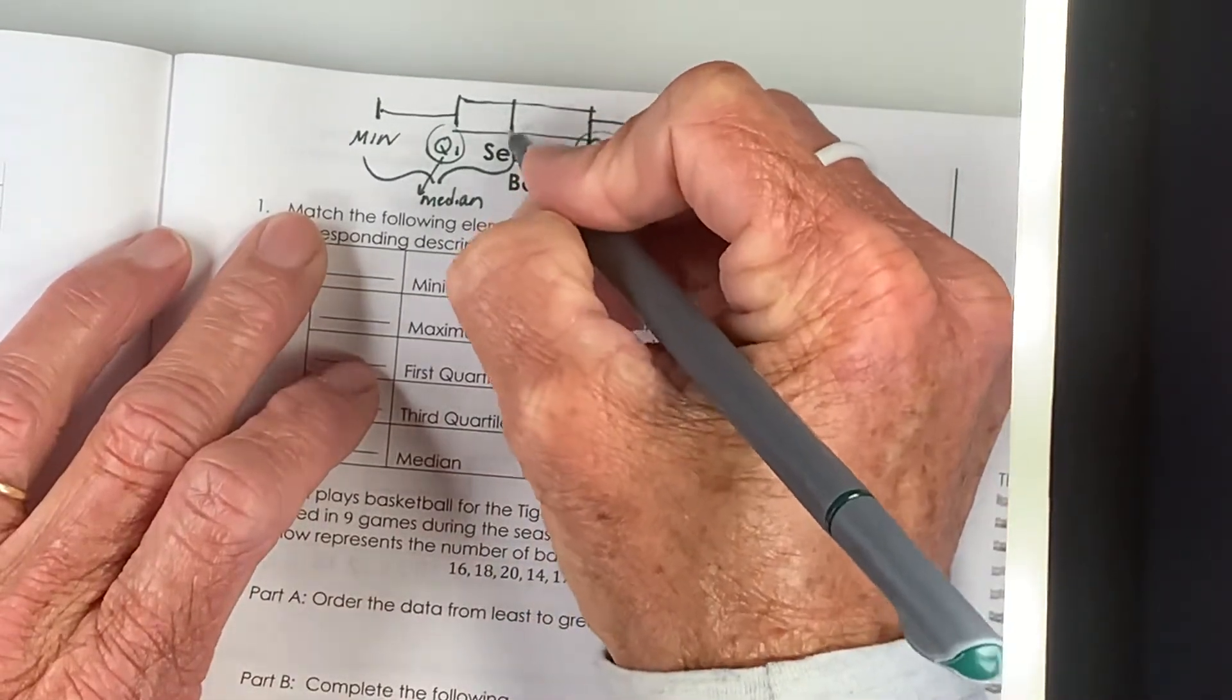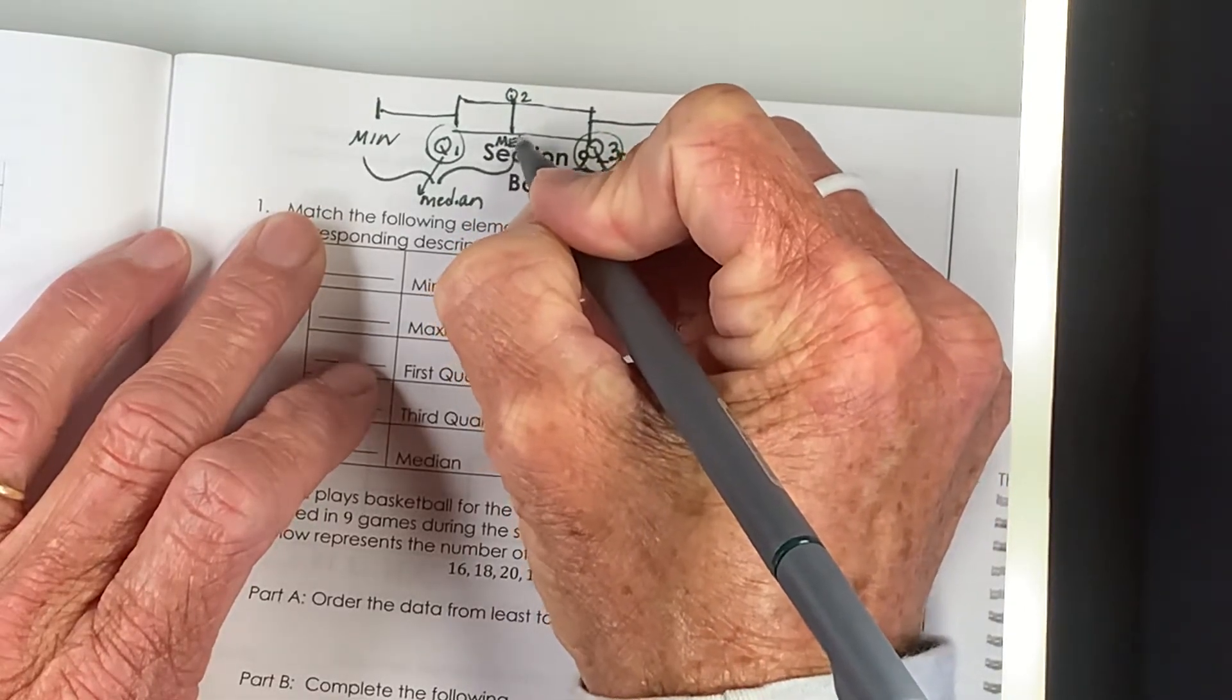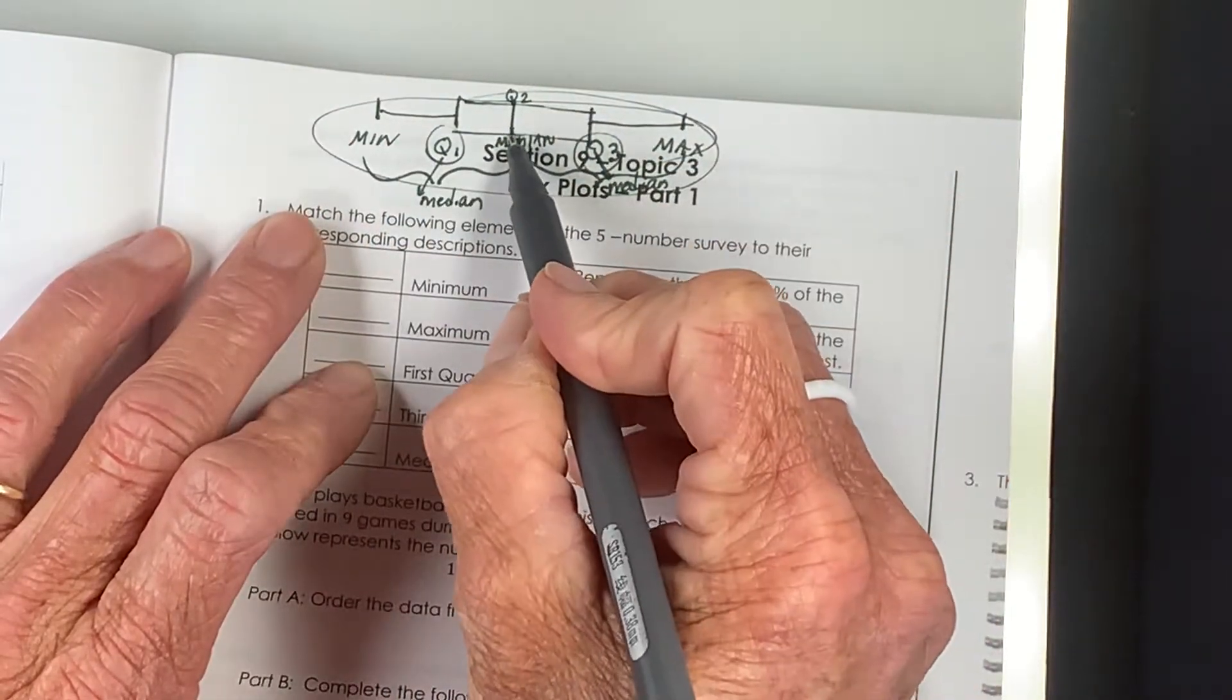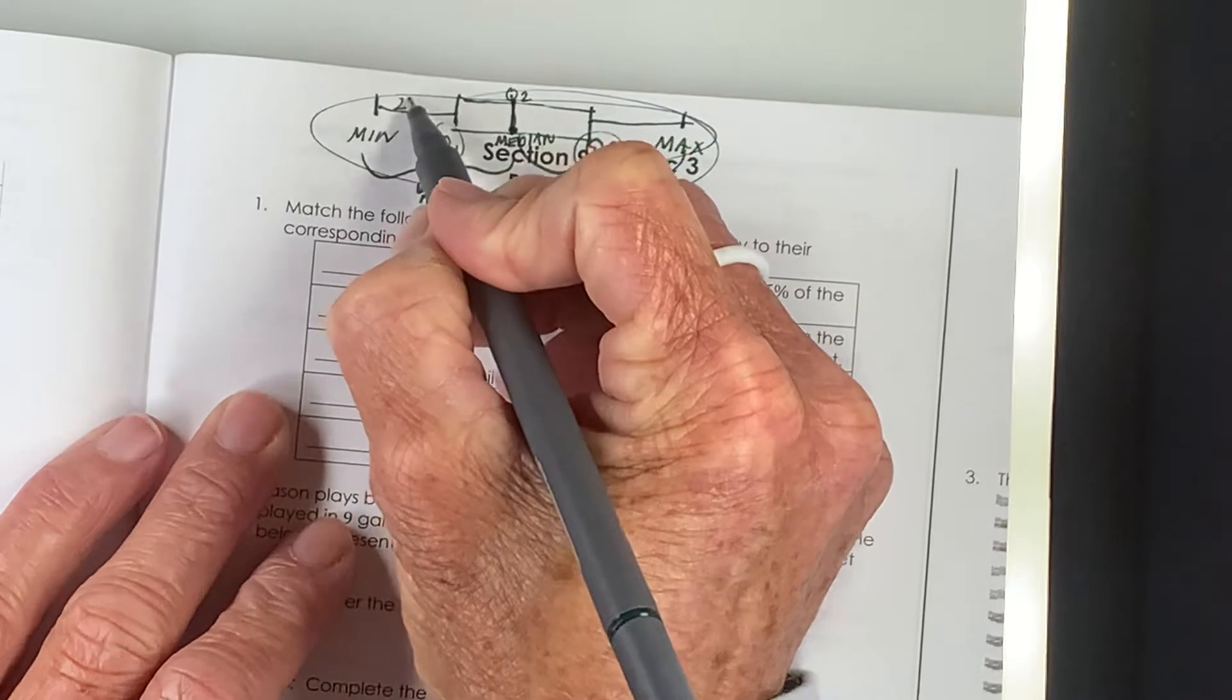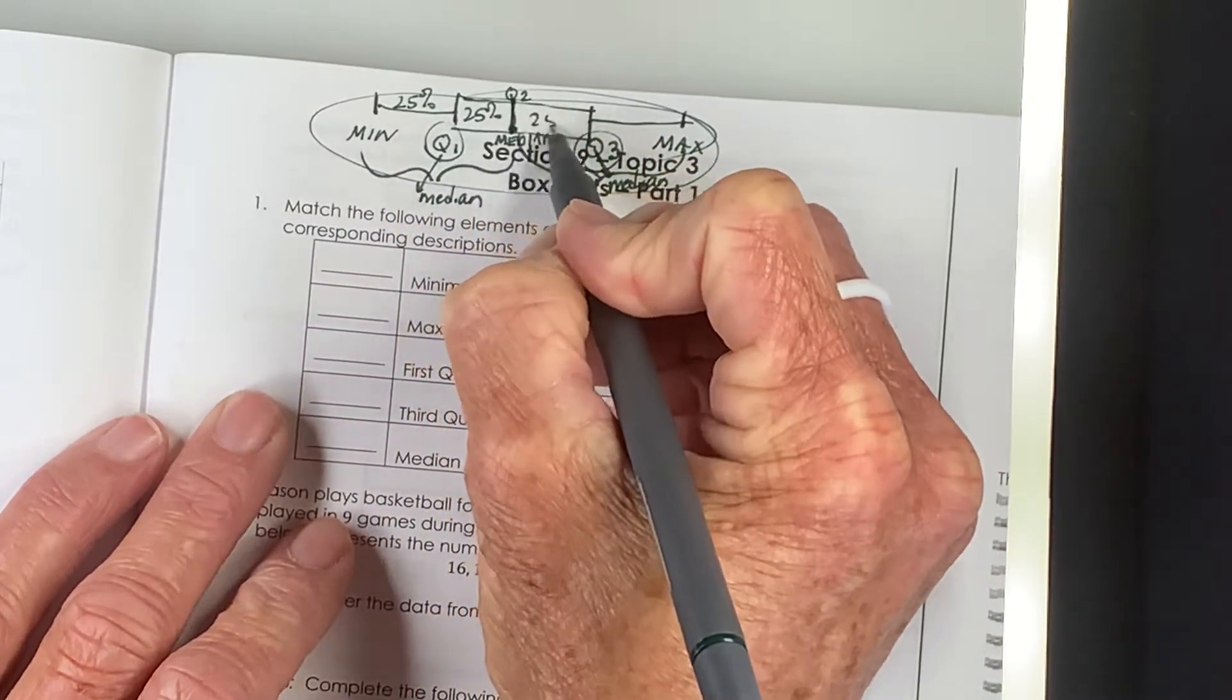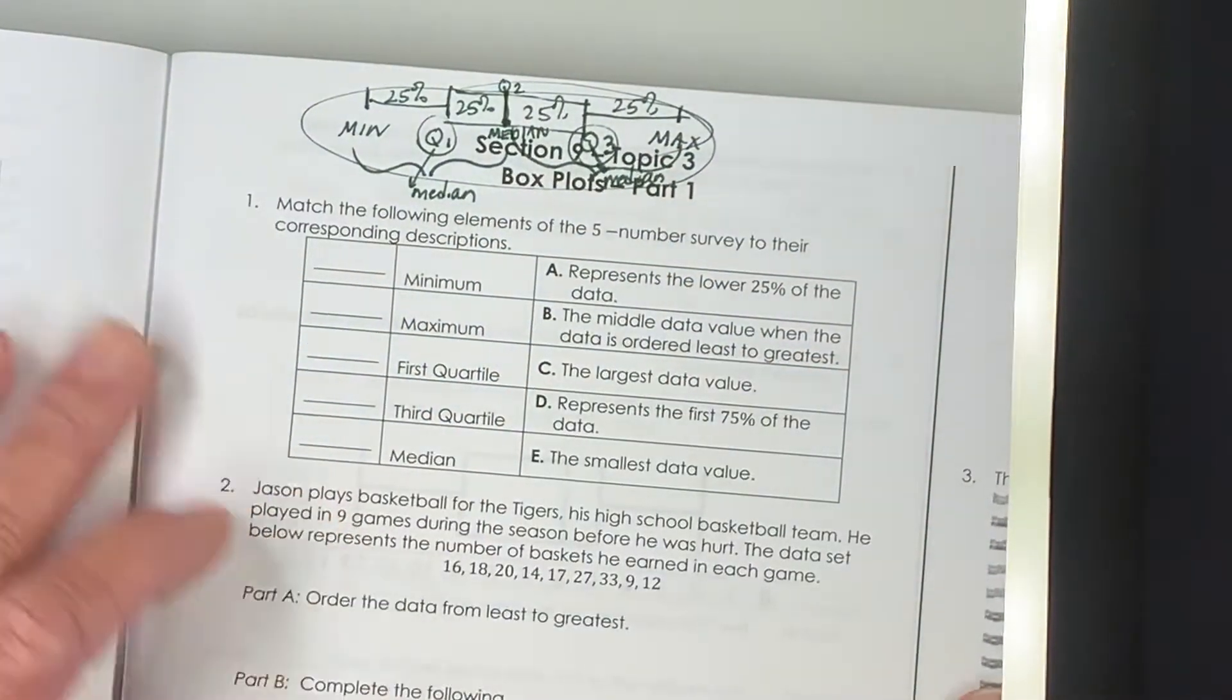And then this number is our median. You can also refer to it as quartile two, but it's the median for all of the data for our entire set. So it's the number that's exactly in the middle when we put the data in order. 25% of our data is here, 25% is here, and in each of these sections we have 25%, one fourth or one quarter of all the data.